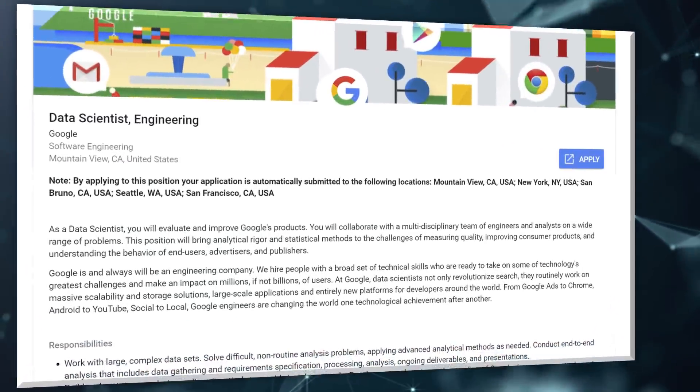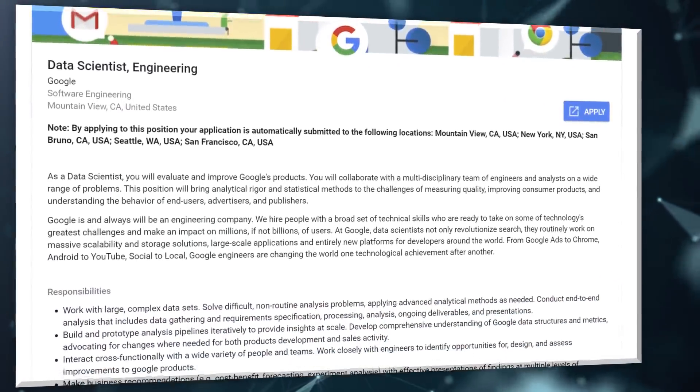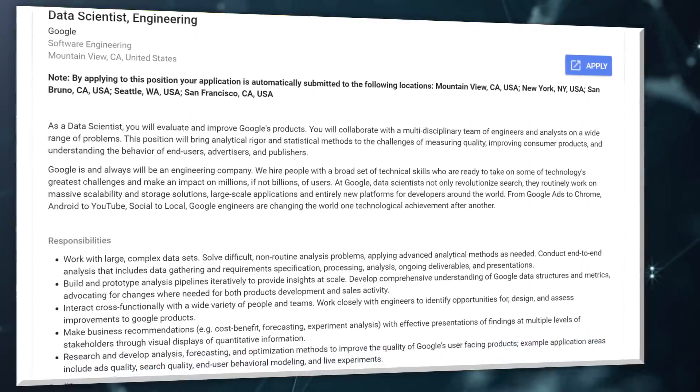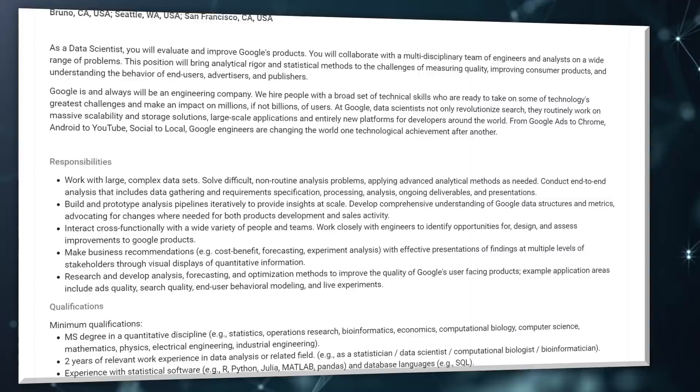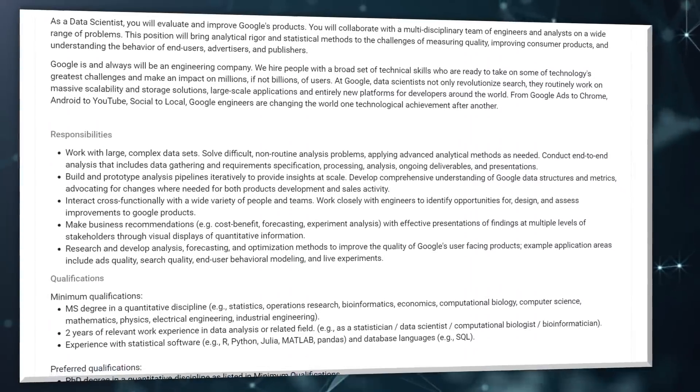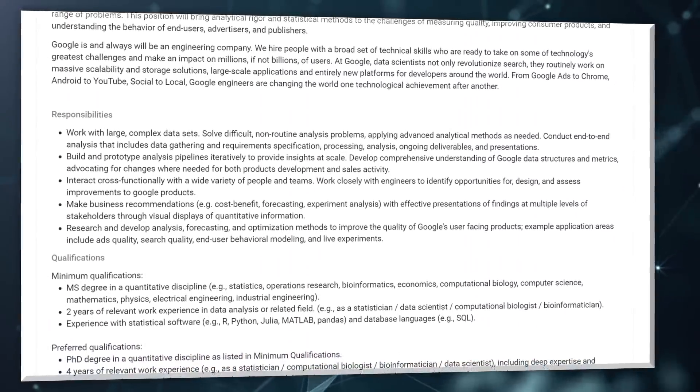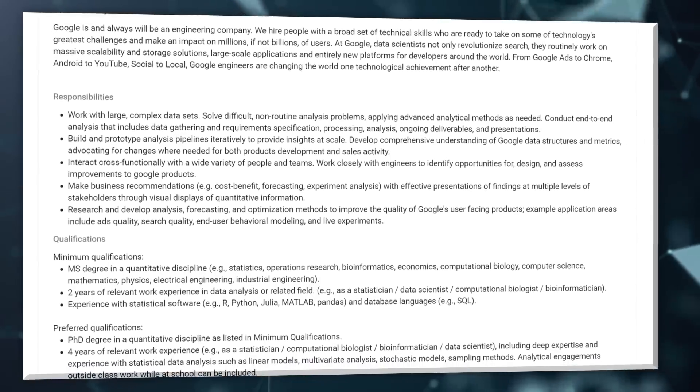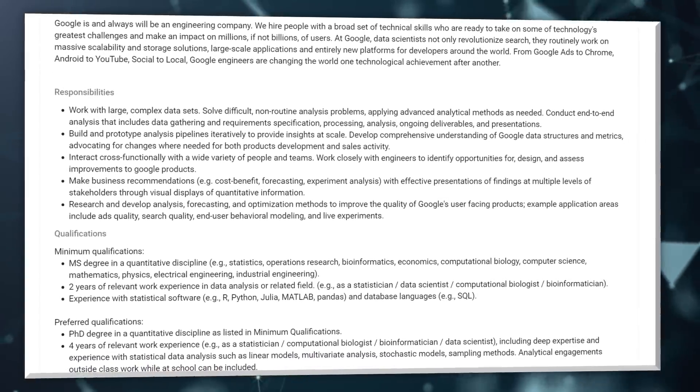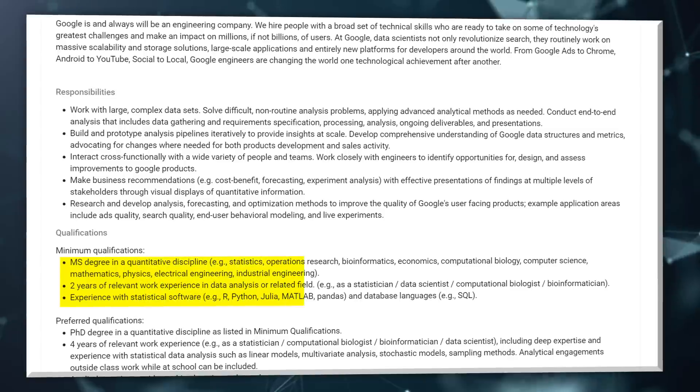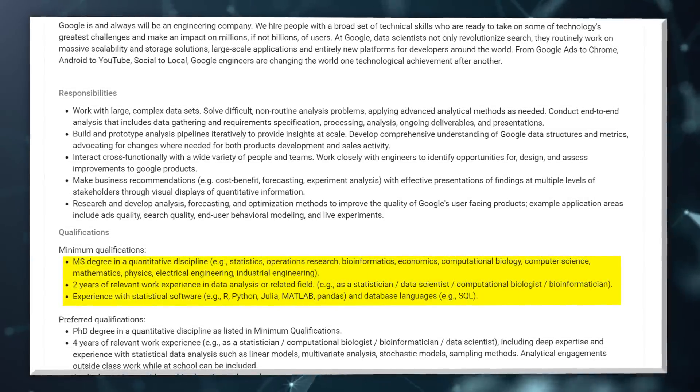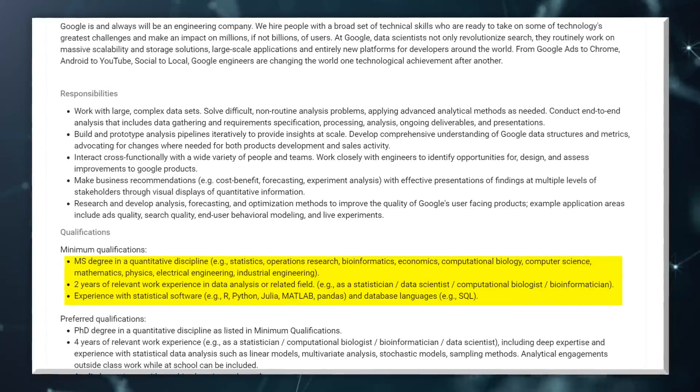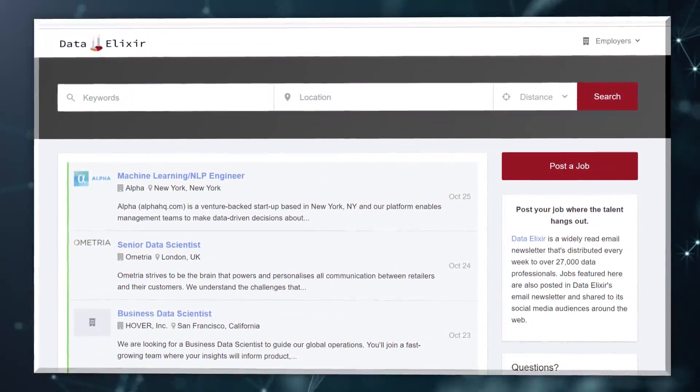For example, if we look at a data scientist job position hiring page at one of the big four tech companies like Google or Facebook, we'll see that they expect several years of experience and a relevant undergraduate, sometimes even graduate-level degree. That's because they can afford to do that. Everyone wants to work there, and they have more data than anyone else on the planet. So they set the bar very high. But don't get discouraged by that.